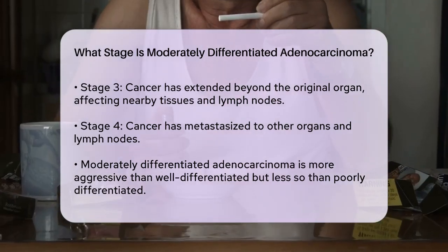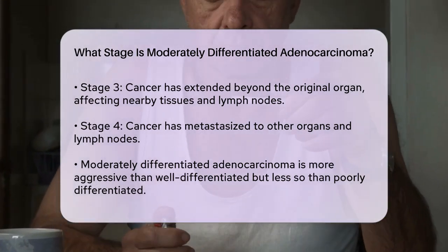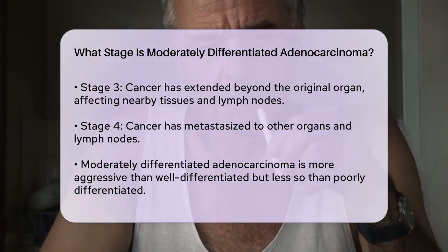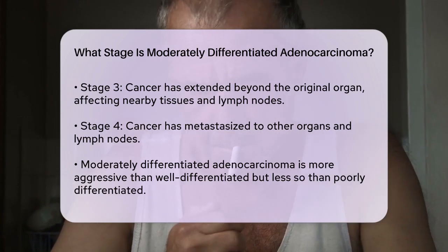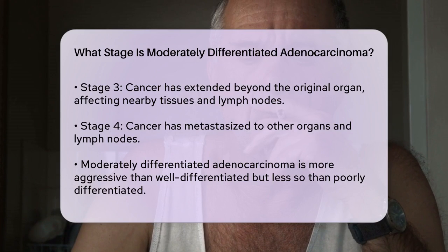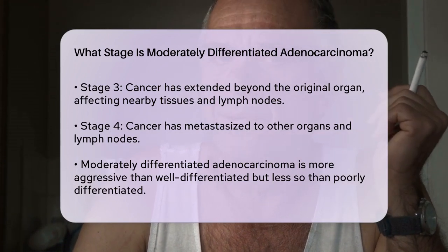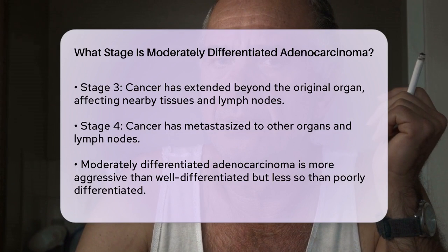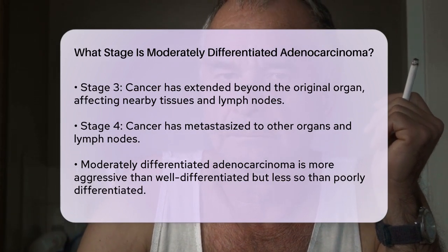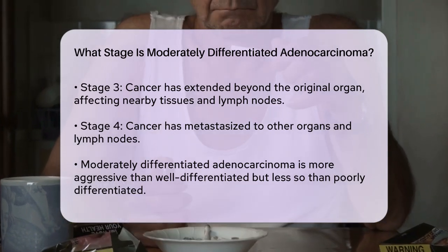If the cancer is moderately differentiated and it's small, localized, and hasn't spread to lymph nodes, it would be classified as stage 1. If it has grown a bit larger or spread to nearby lymph nodes but not beyond the organ, it would be stage 2. If the cancer has spread beyond the organ to nearby tissues and several lymph nodes, it would be stage 3. And if it has spread to other organs and lymph nodes, it would be stage 4.